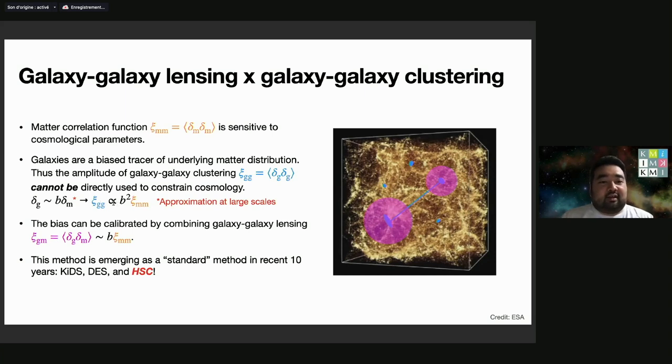This is approximation at large scales, and xi_G can be written as B squared times xi_M. This bias parameter can be calibrated by combining the galaxy-galaxy lensing, because that gives cross correlation between the galaxy and matter.